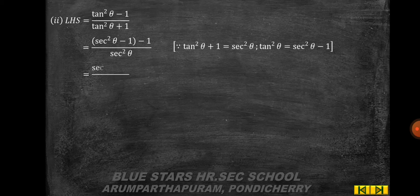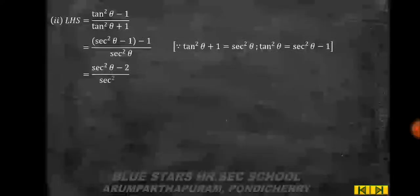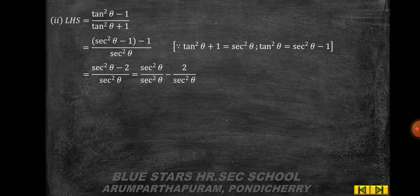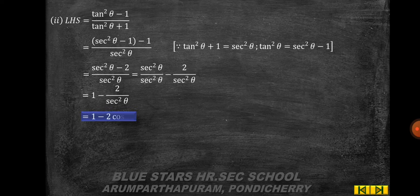Using the formula tan²θ + 1 = sec²θ and tan²θ = sec²θ − 1, we get (sec²θ − 2) / sec²θ. Separating the denominator: sec²θ/sec²θ − 2/sec²θ = 1 − 2/sec²θ = 1 − 2cos²θ, since 1/sec²θ = cos²θ.